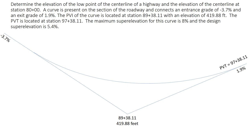We're also told the PVT is at station 97+38.11 and this actually will allow us now to calculate the length of the curve. We know the distance from the PVI to the PVT now, that's 800 feet.